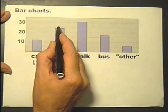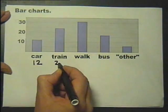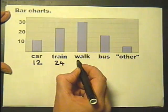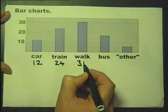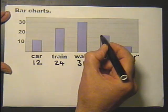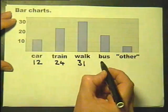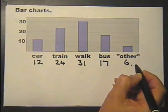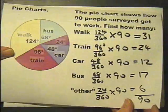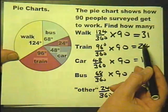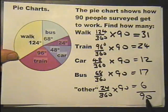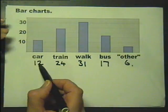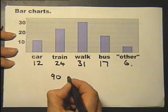The train — well if that's 25, that must be 24 went by train. And if that's one below there, that must be one above there, so that looks like 31. Bus, that's a little bit more, so that's maybe 15, 16, 17. And that's just a bit above the 5, so that's 6. In fact it just happens to be exactly the same information as the pie chart that we did in the previous part. So those numbers are exactly the same, and if we add those up we'll get the 90 that in fact was in the survey.